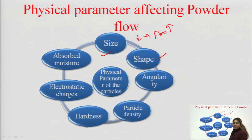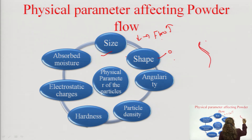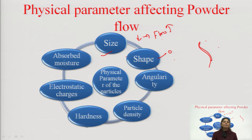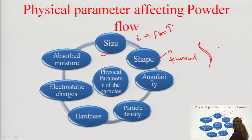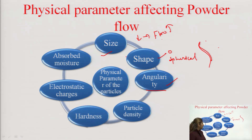Next is shape. The shape of the drug particles should be spherical. If particles are flowing from the hopper and are spherical in shape, they can easily flow. If the shape is irregular, the flow property can be affected. So it is always preferable that the shape should be spherical. Next is angularity — the angle at which your drug flows is also a very important parameter that decides whether you have good flow or not.